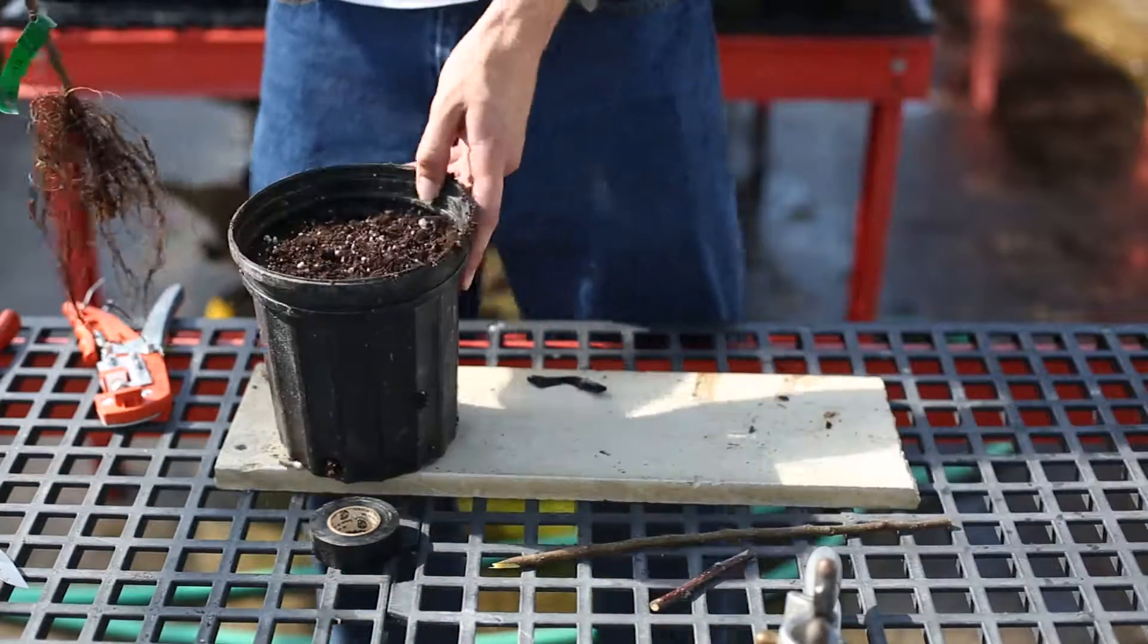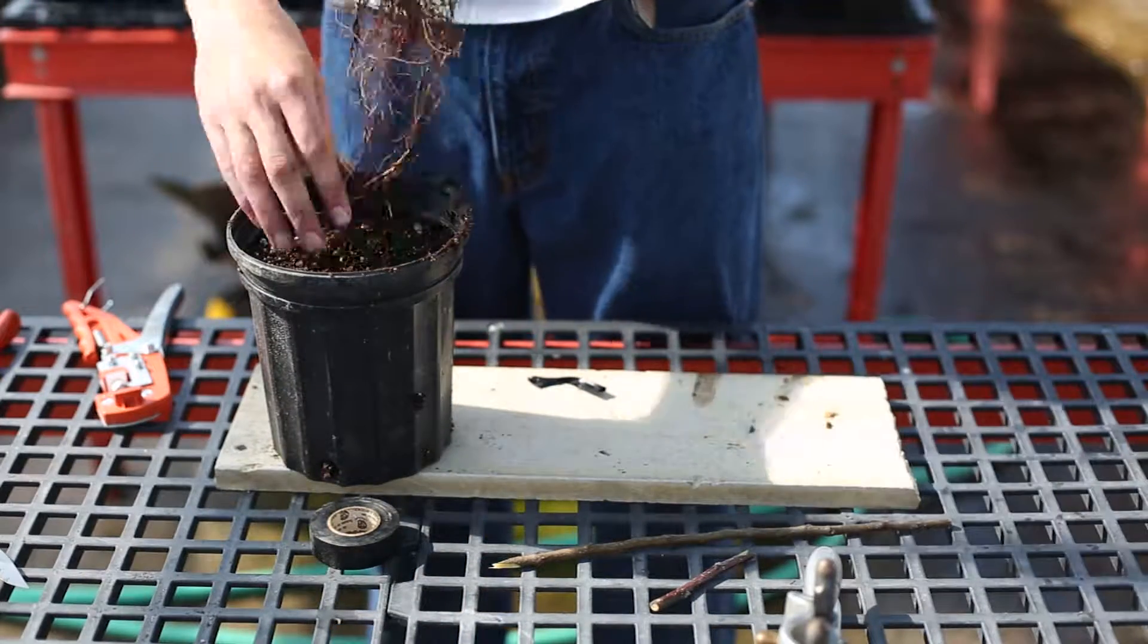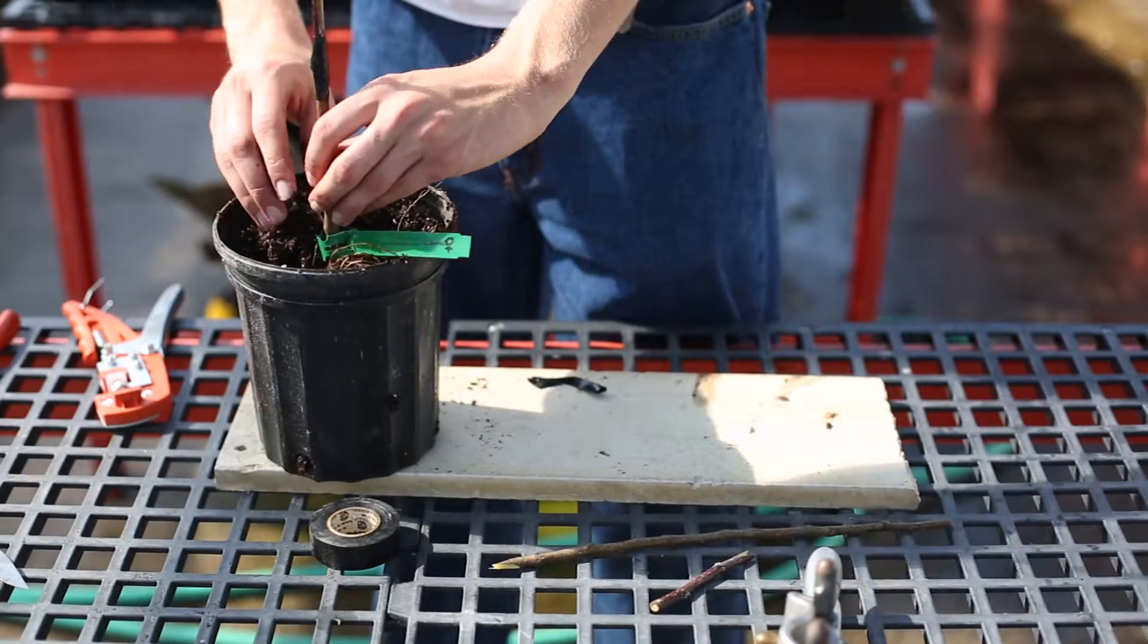When you do plant it, you want to plant it just so the top of the roots are about an inch below the top of the pot.